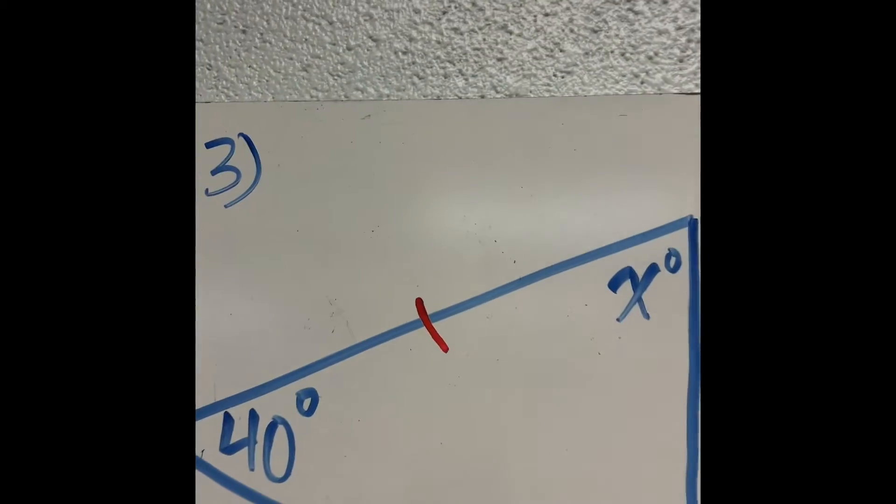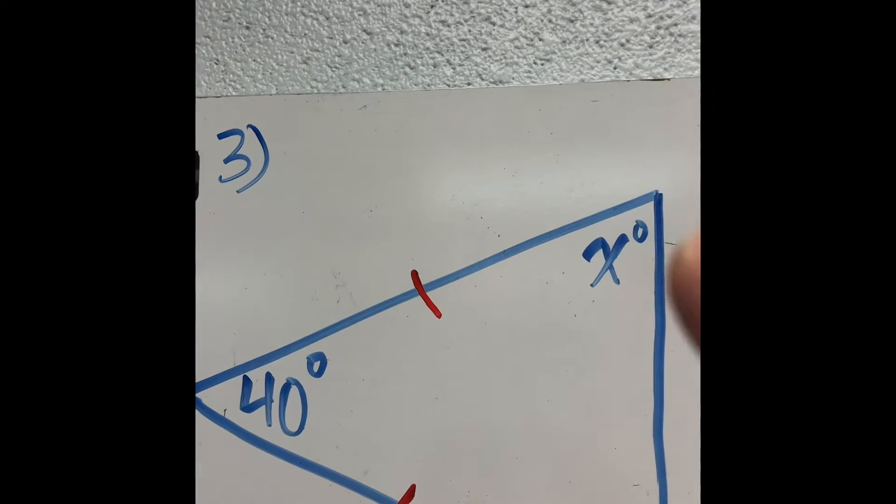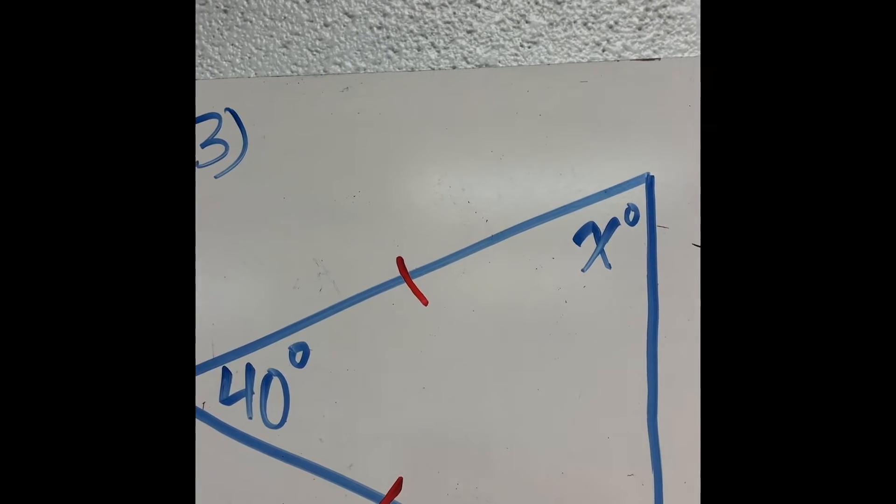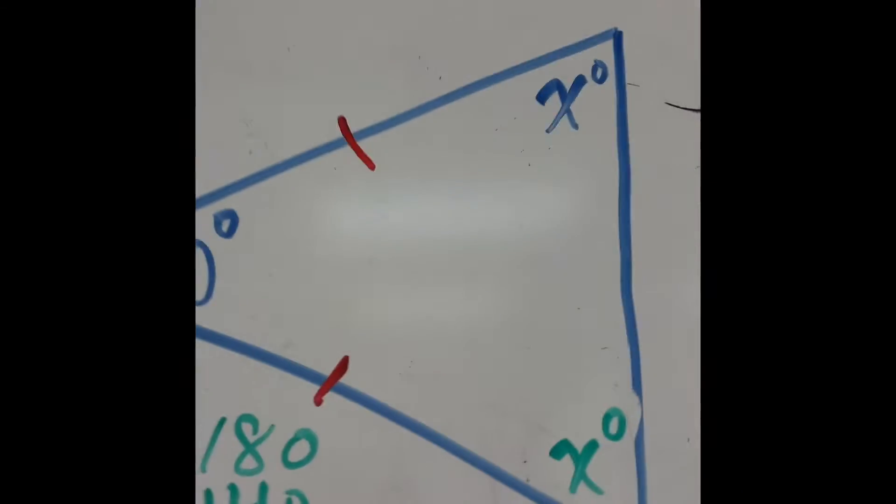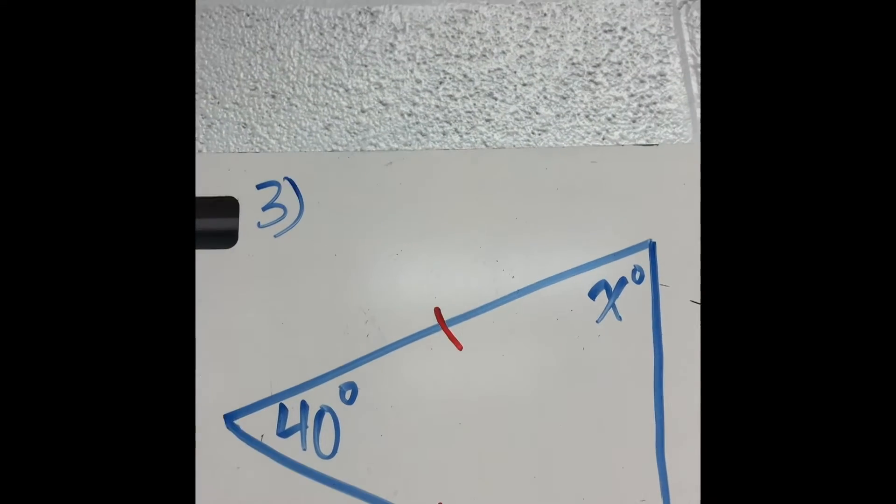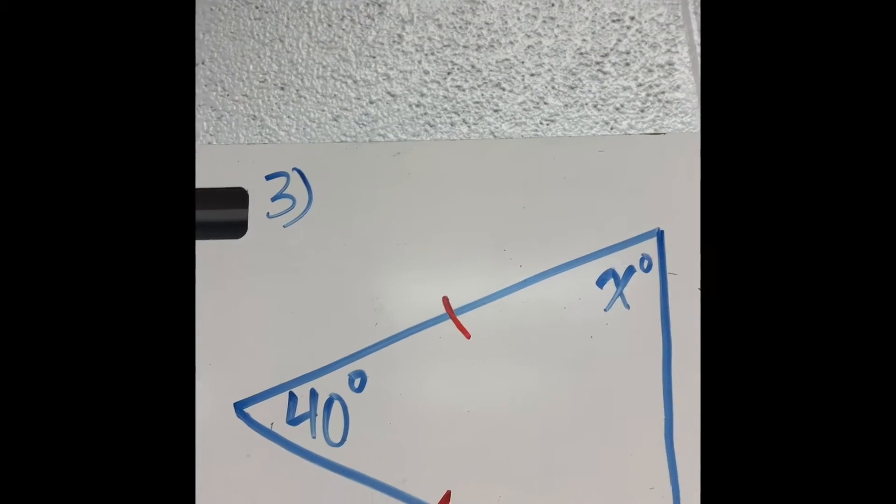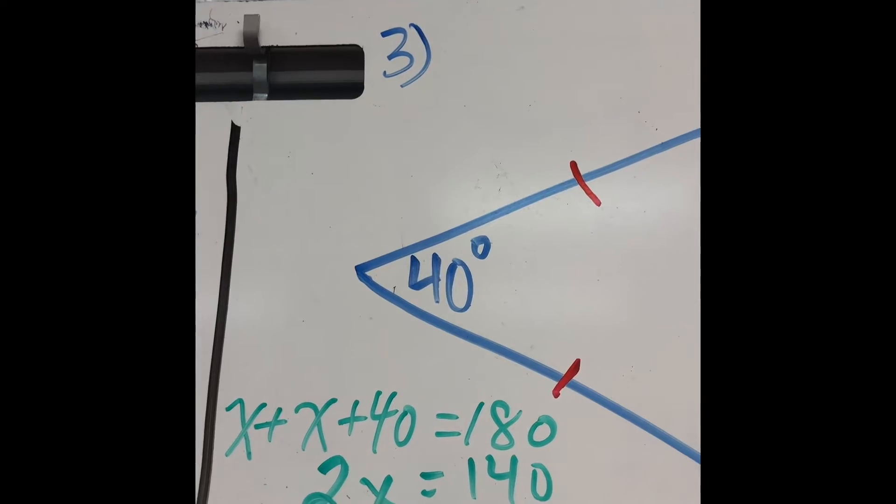But over here, if this is x, this guy here is x, right? I'm going to call this x right here. So I'm going to say x plus x plus 40 equals 180, right? Solve for x. x equals 70.